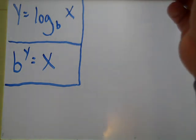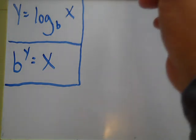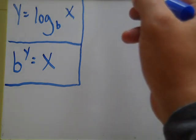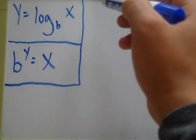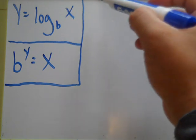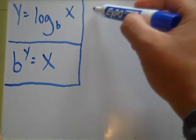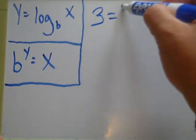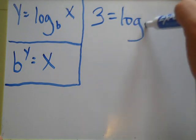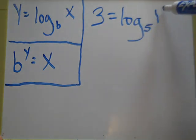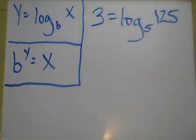So even if that sounds complicated, it won't here in a second. What I'm going to do is basically express a logarithmic equation like this. Let's say we've got 3 equals log base 5, 125.